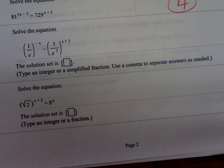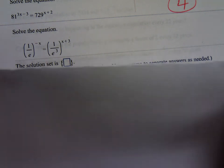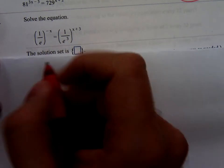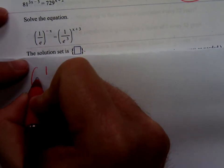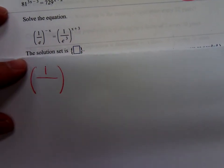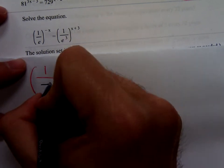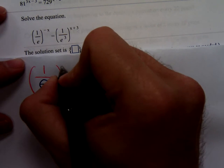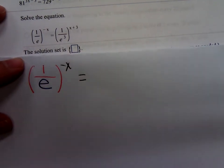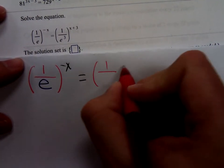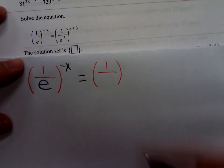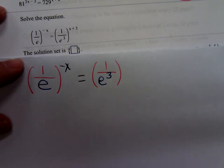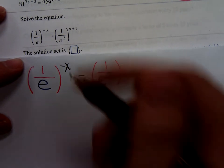This is another one of those that has the e's in it. I'm going to rewrite it as 1 over e raised to the negative x power equals 1 over e to the third raised to the x plus 3 power.